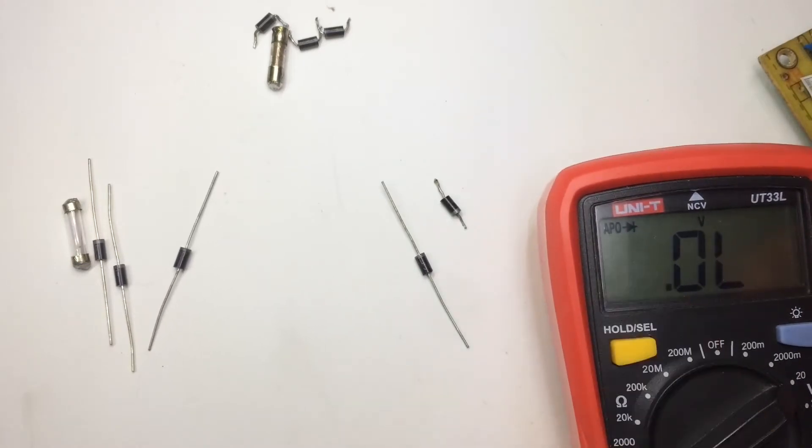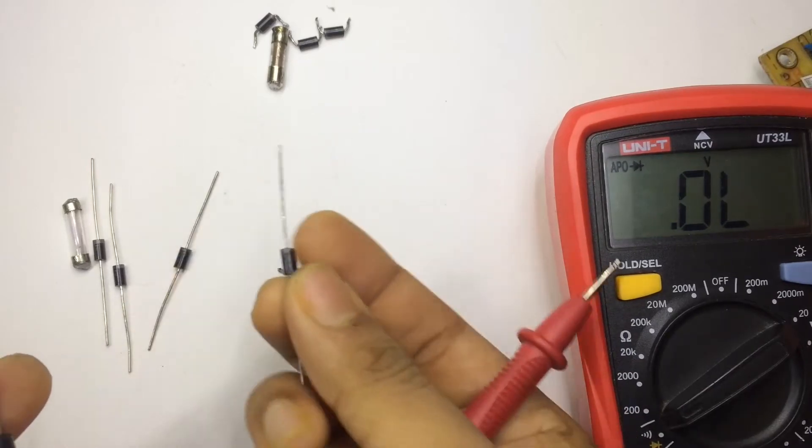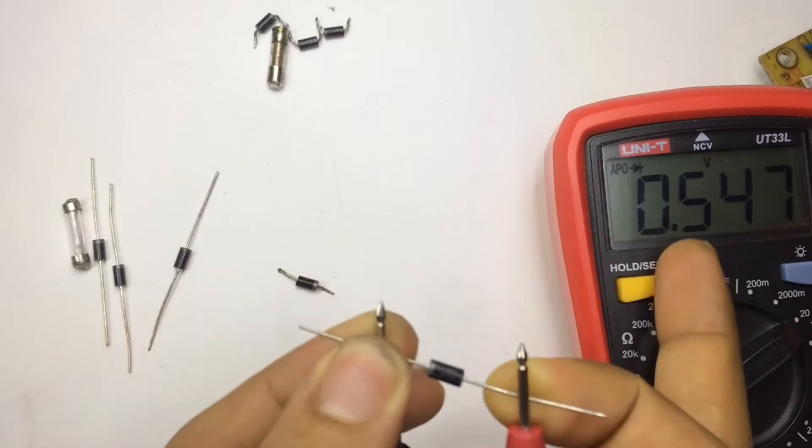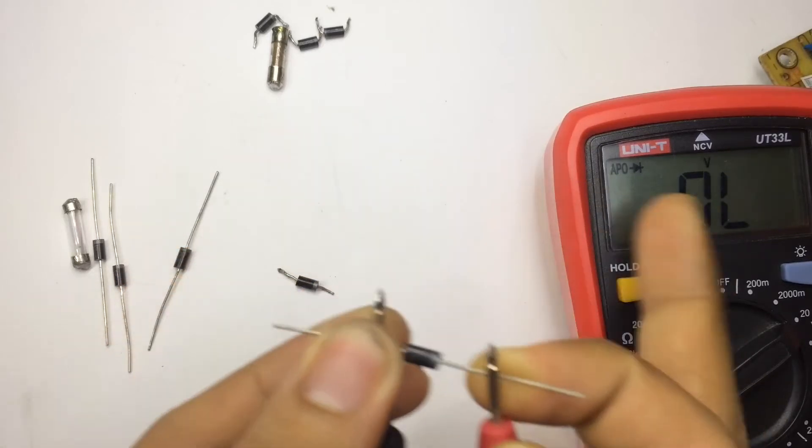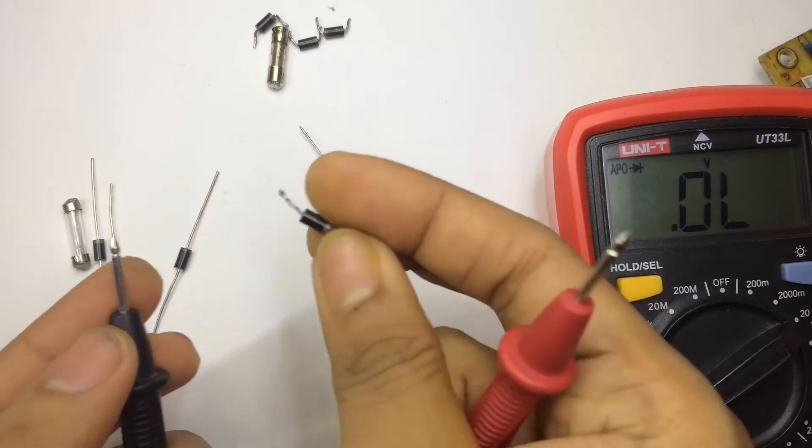First, put your meter into diode testing mode. And if you take a good diode, it's going to conduct only in one direction. Like now it's conducting, and if I reverse it, it's not gonna conduct. That means it's a good diode.